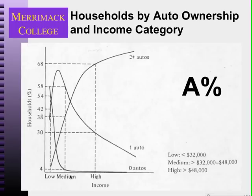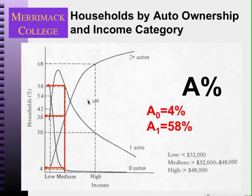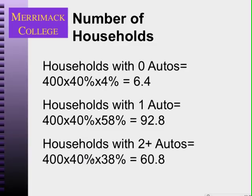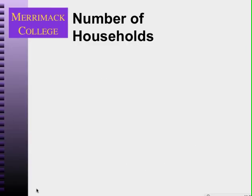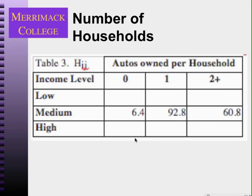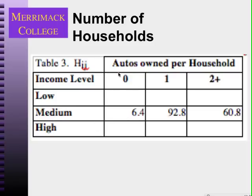We'll use the first graph to find the number of households in the category. With an average income of $44,000, the percentage of households that are medium income is 40%. The percentage of medium-income households that own zero autos is 4%, and one auto is 5%, based on these graphs. So the number of households in each category is: medium-income with no autos equals 400 times 40% times 4%, which gives 6.4 households; and so on for other auto-ownership levels.